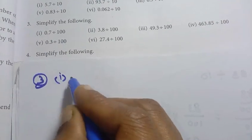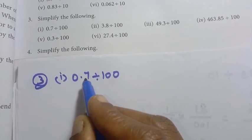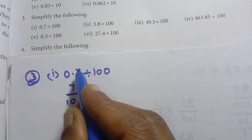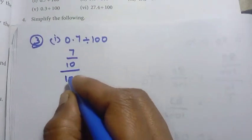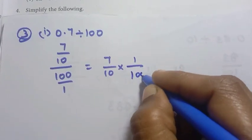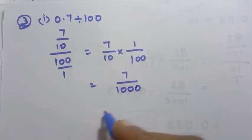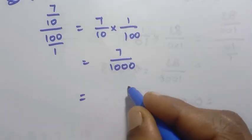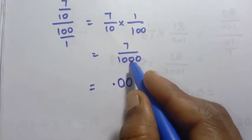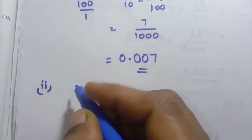Third problem, first: 0.7 divided by 100. We can see 0.7 has 1 decimal place, so it is 7 by 10. Divided by 100, that is 7 by 10 into 1 by 100, giving 7 by 1000. That is 3 decimal places: 0.007 is the answer.